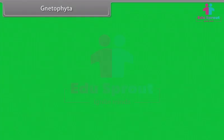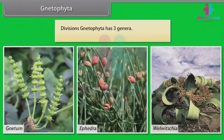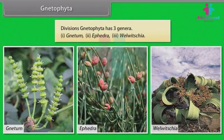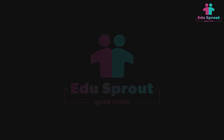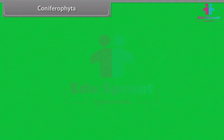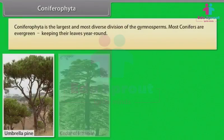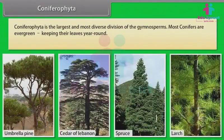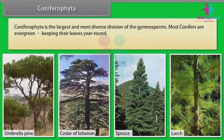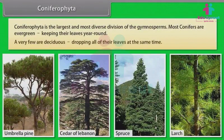Gnetophyta has three genera: Gnetum, Ephedra, and Welwitschia. Coniferophyta is the largest and most diverse division of Gymnosperms. Most conifers are evergreen, keeping their leaves year-round. Very few are deciduous, dropping all of their leaves at the same time.